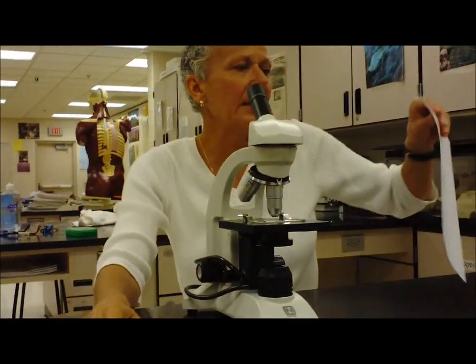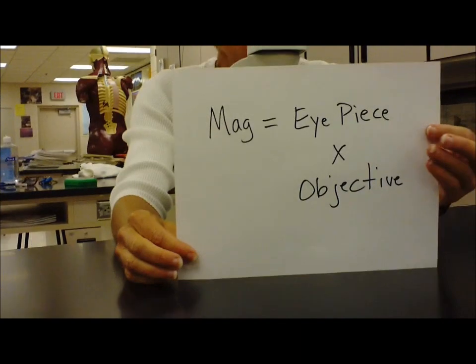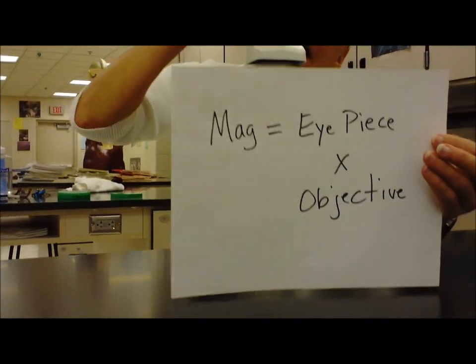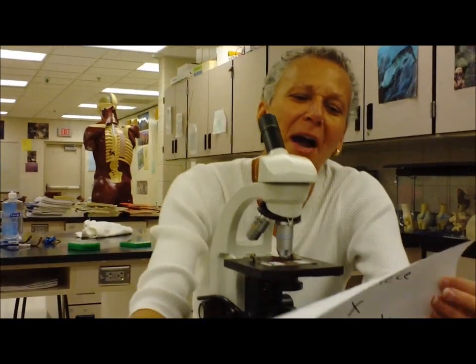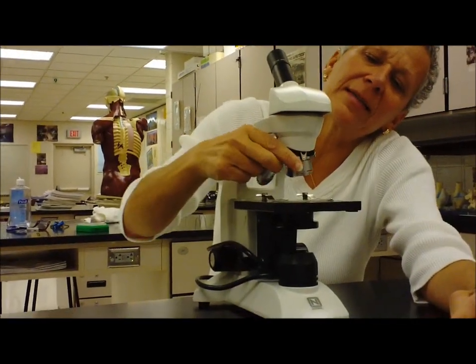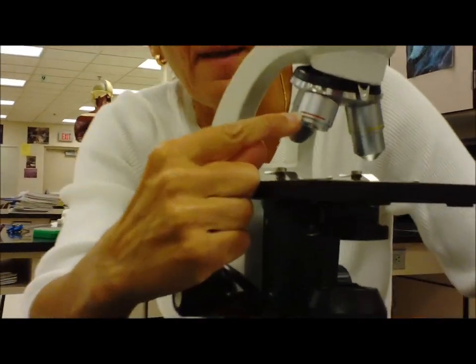Also we should know how to do magnification. Magnification is multiplying the eyepiece, which is up on the top, times the objective lens you're using. And the objective lenses have the magnification written right on them.